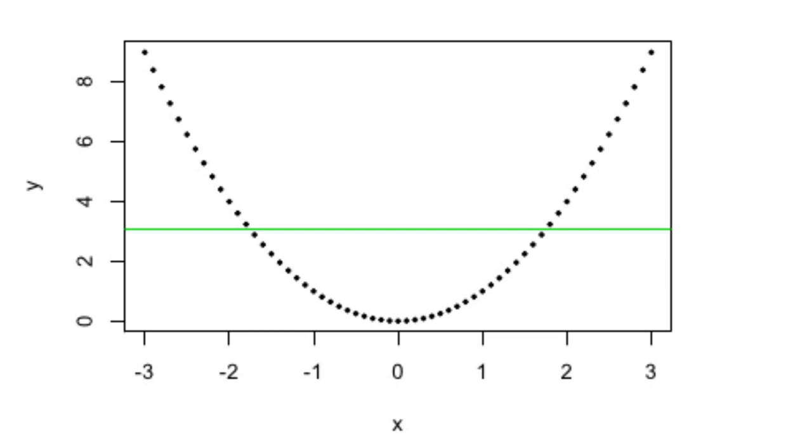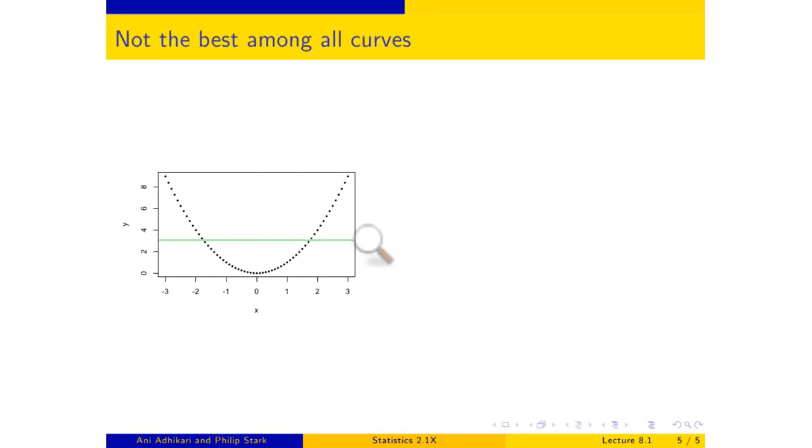I can put any line I want through it, and associated with any line I put through it, there's an RMS error. It turns out that the best line, the regression line, is flat. That is the best among all straight lines. So what? You don't want to use the line in the first place. It's the best of a bad lot.